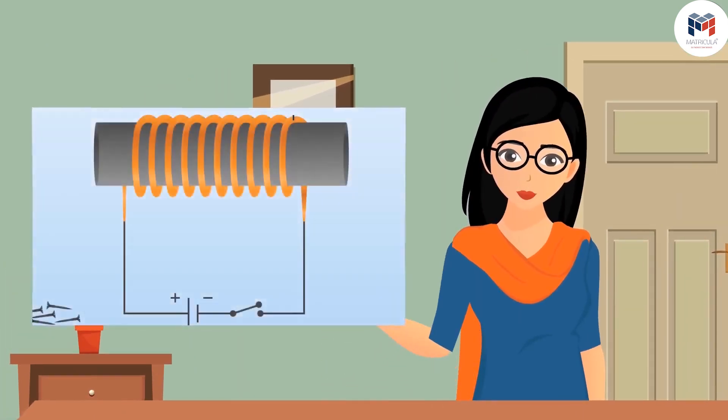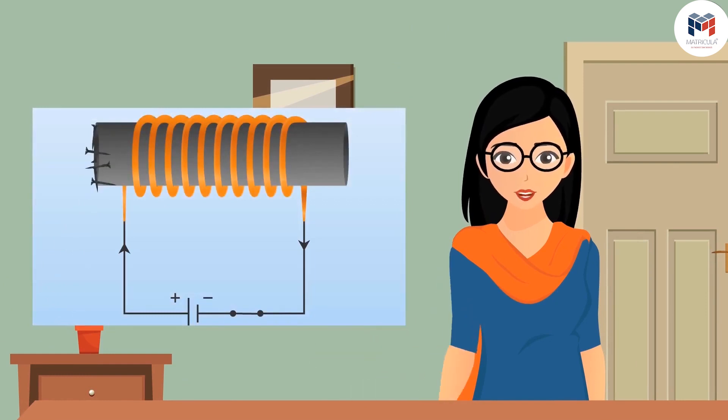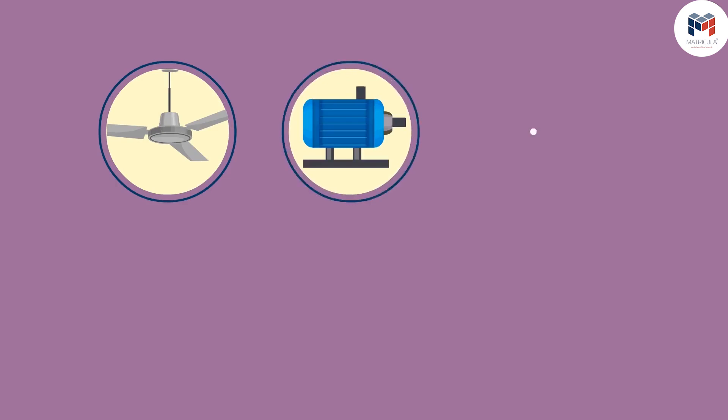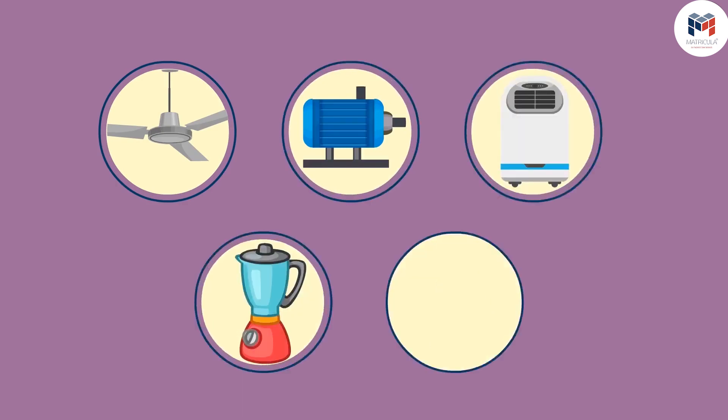Commonly in electric motors electromagnets are used in place of magnets. Electromagnets can be formed by putting a soft iron core in the coil. This we have already covered in our previous video. Electric motor is used in fans, water pumps, air cooler, grinder mills and in huge industries.